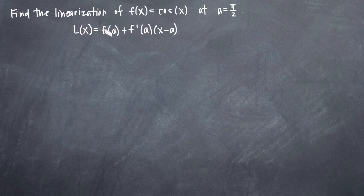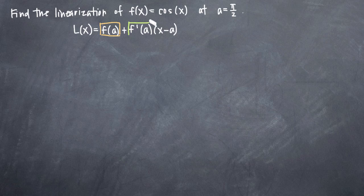So what we need to do is use this formula for L of x. It's the same formula for the linearization as it is for the linear approximation. You'll notice that we have a couple components of this formula that we need to pay attention to. We have f of a, which is simply the value of the function at the point a, and we've been given a equals pi over 2. We also have f prime of a, which is the derivative of the function at the point a equals pi over 2. And then we have just simply a here, which we already know to be pi over 2. So we need to find all three of these things.